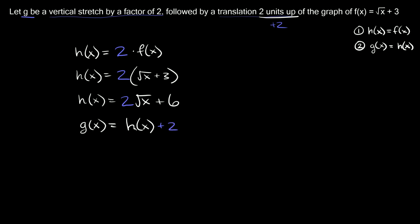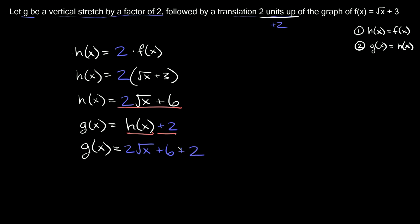Now we're going to combine these two. Remember, h of x equals two times the square root of x plus six, so that's what we write for h of x. So g of x equals two times the square root of x plus six, and then we also have this plus two at the end. Combining like terms, six plus two equals eight. So finally, g of x equals two times the square root of x plus eight — that's our final answer.